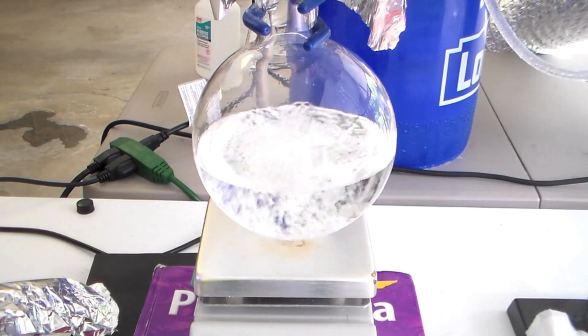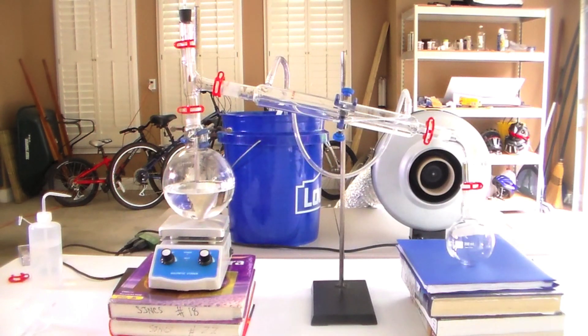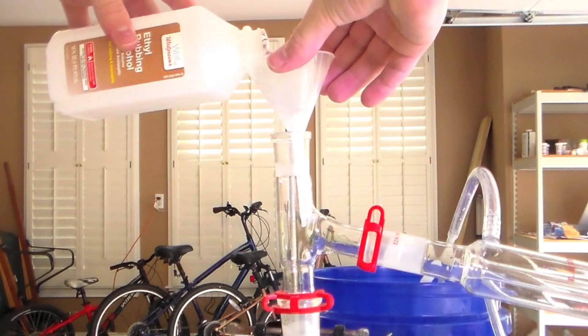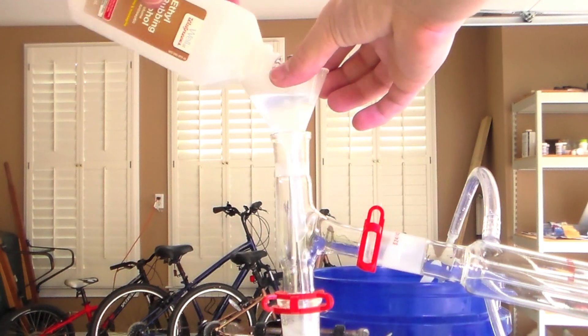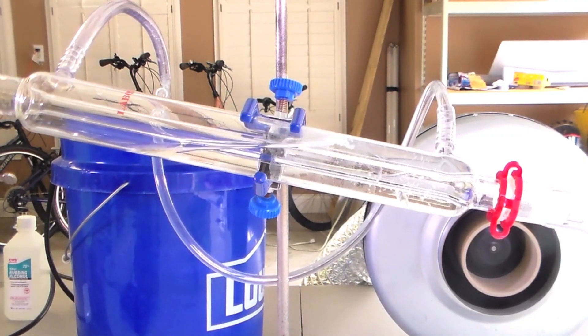The first step is to concentrate the ethanol to about 85%. This can be done with a simple distillation. Charge the round bottom flask with the rubbing alcohol and set up for simple distillation. Make sure you have cold water flowing through the condenser.